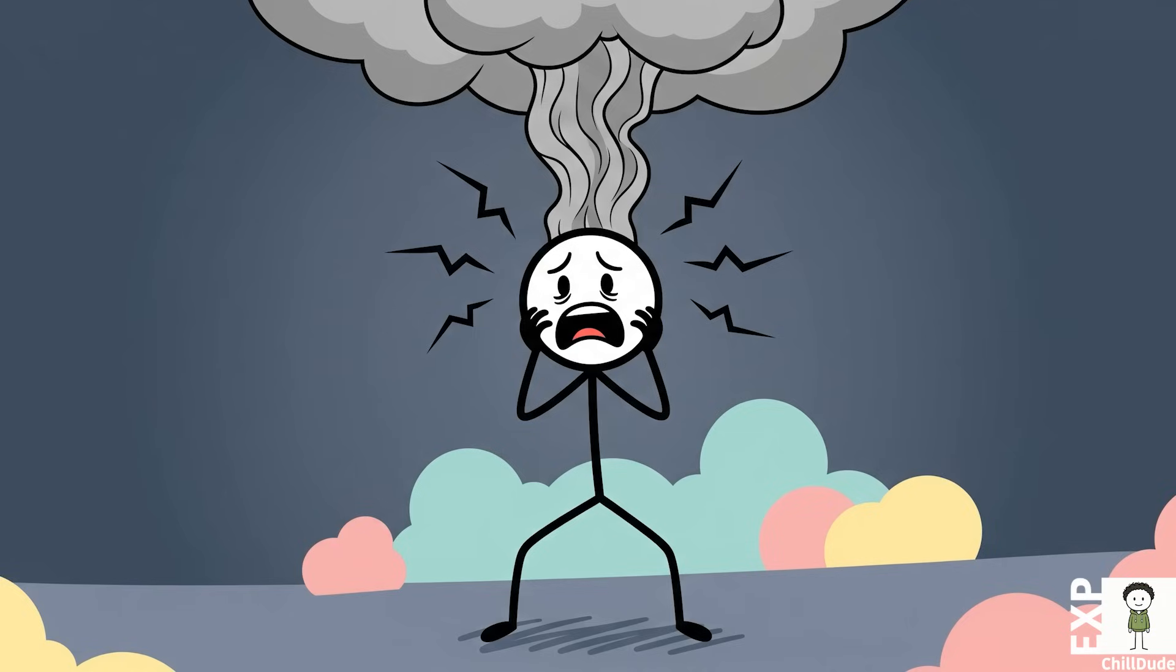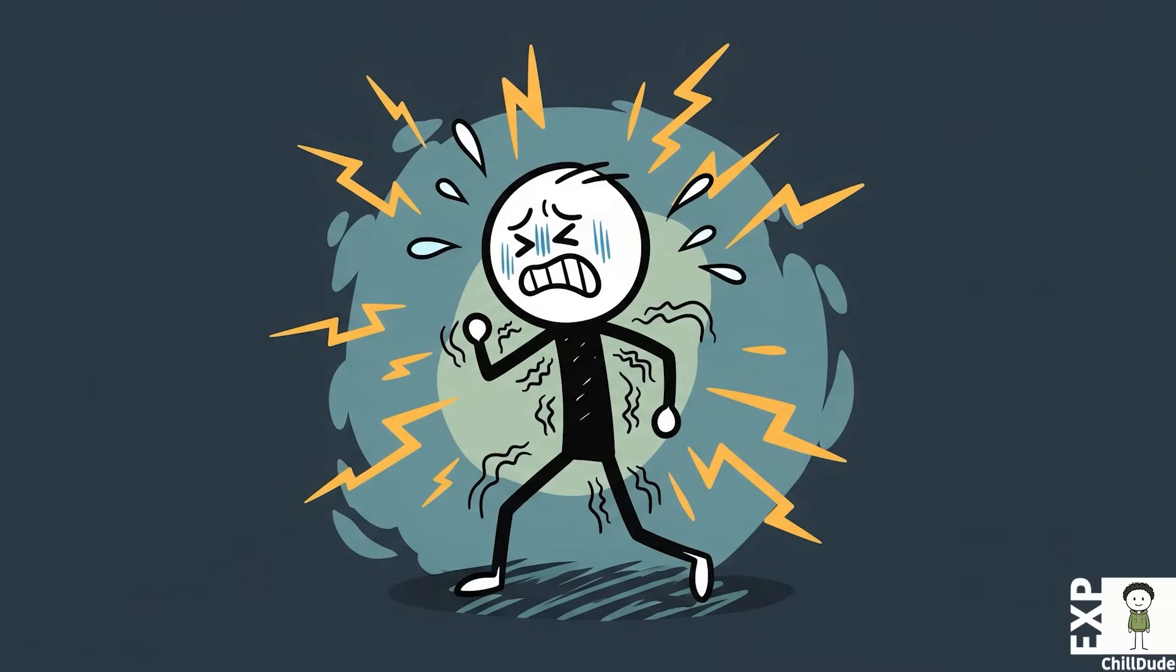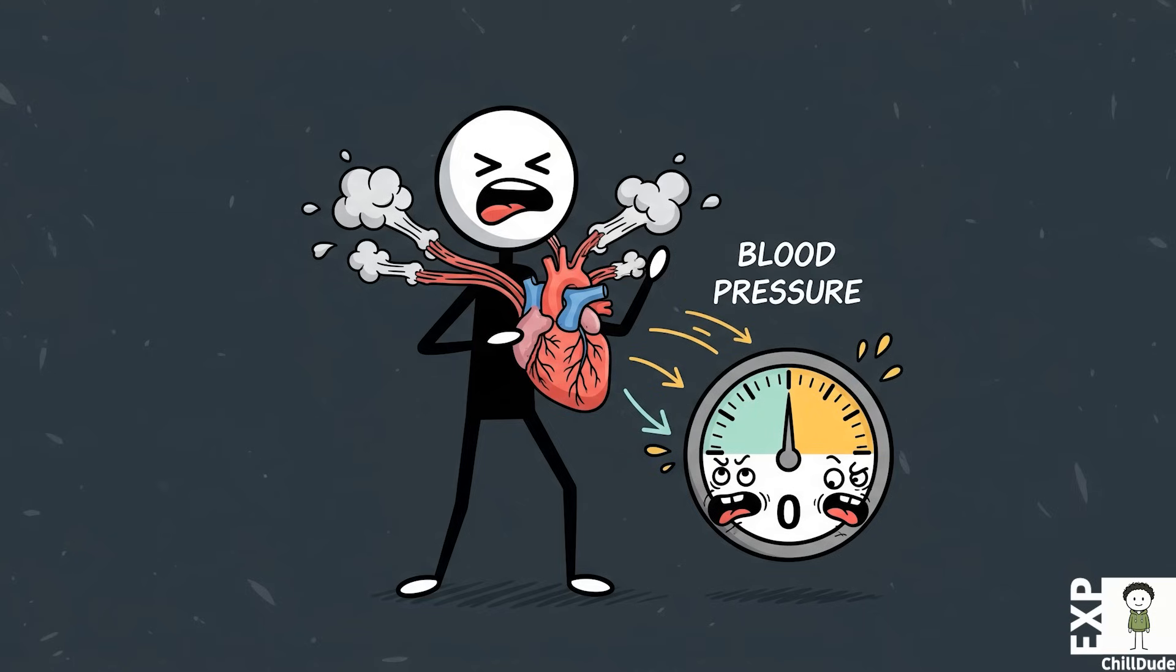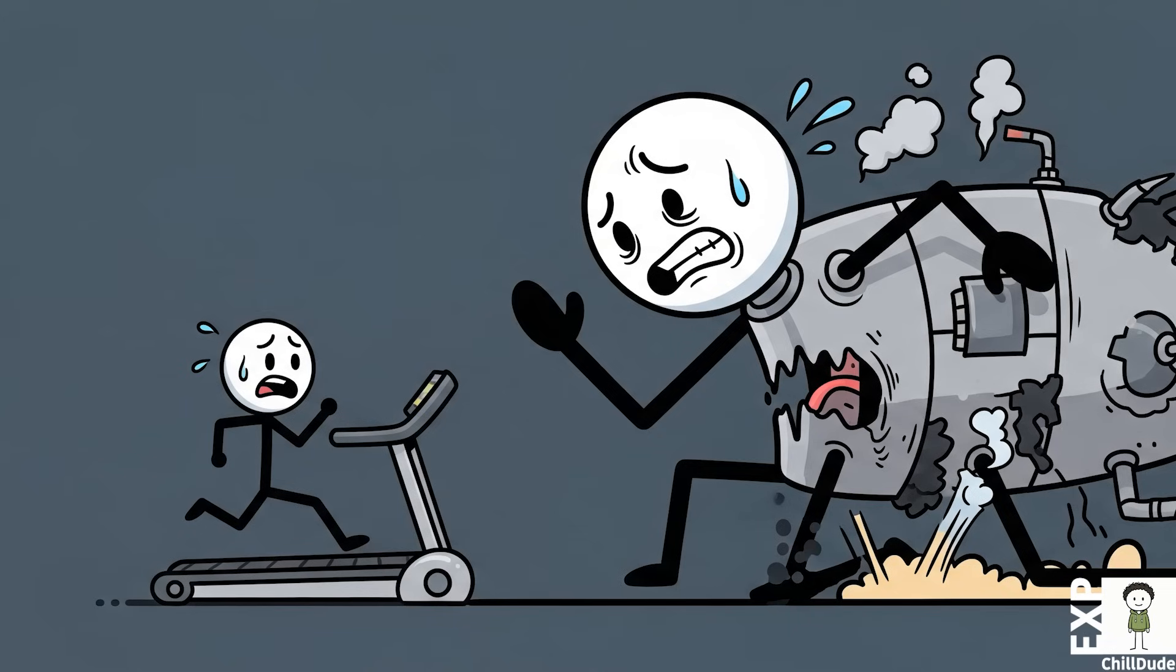He theorized that the victim's absolute belief in their impending doom triggered a state of perpetual, unrelenting fear. This intense stress, he argued, sent their sympathetic nervous system—the body's fight-or-flight command center—into such a state of overdrive that it eventually led to a catastrophic collapse of blood pressure and circulatory failure. The mind, gripped by terror, was literally running the body into the ground.